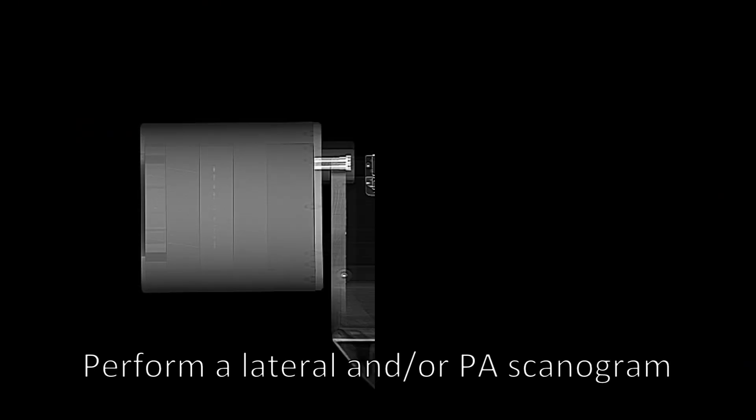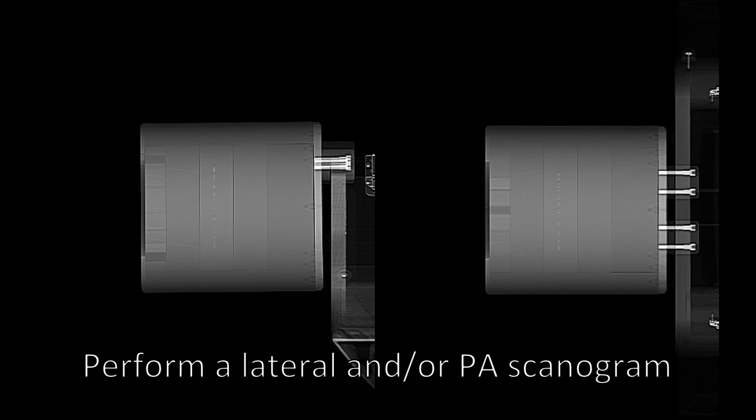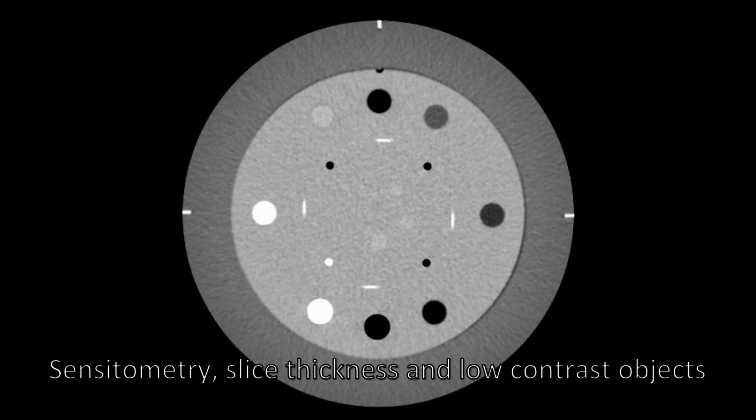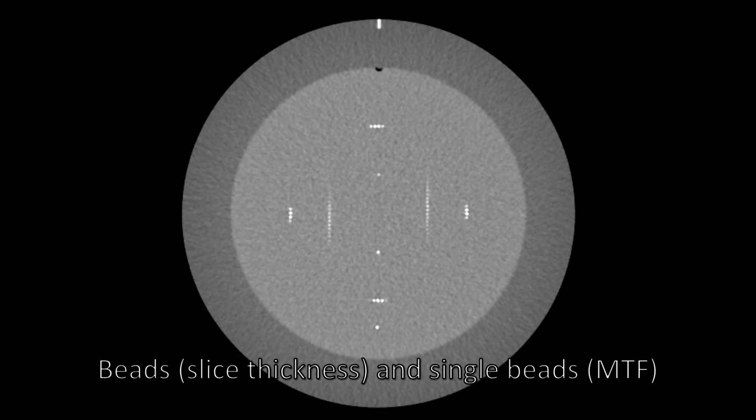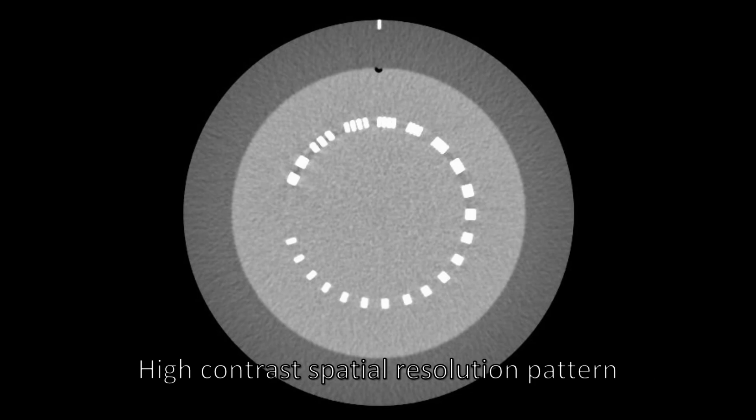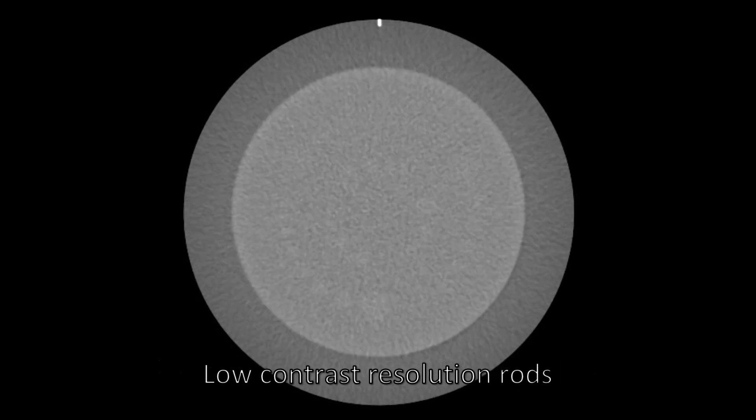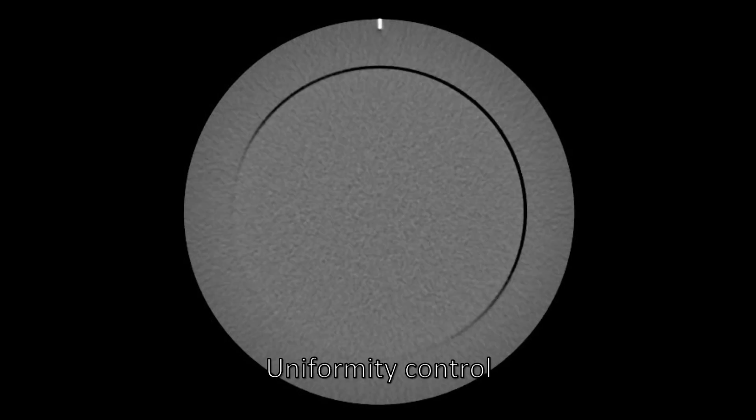Perform a lateral and or posterior anterior scanogram. Let us describe the CATFAN 600 modules. Each module center is marked with a white marker: Sensitometry, slice thickness and low contrast objects, beads for slice thickness and single beads for modulation transfer function, high contrast spatial resolution pattern, low contrast resolution rods and uniformity control.